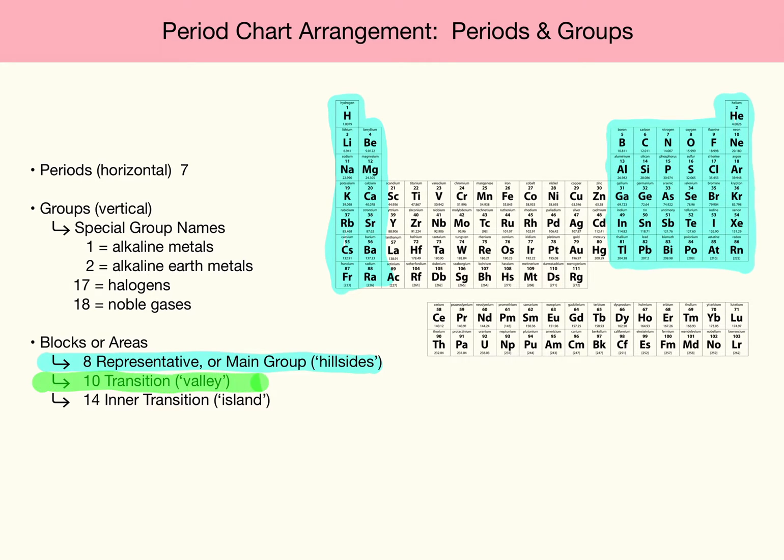Next comes the Transition Elements. That's these elements that are down in the valley, as it were. And finally, there's what's known as the Inner Transition. That's these that make up this little island at the bottom. Now, they may be represented as an island, but actually they should be sliced right inside the Transition Elements. Hence the name Inner Transition.